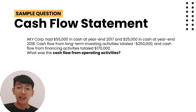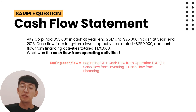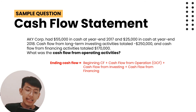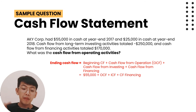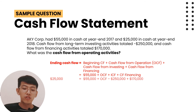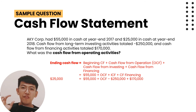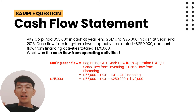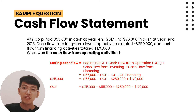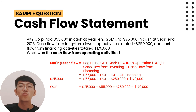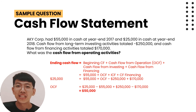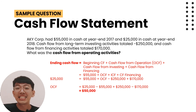We know that ending cash equals beginning cash plus net cash flow. So: 25,000 equals 55,000 plus net cash flow. Net cash flow equals operating cash flow plus investing cash flow plus financing cash flow. Therefore: 25,000 equals 55,000 plus OCF plus minus 250,000 plus 170,000. Solving for OCF: OCF equals 25,000 minus 55,000 plus 250,000 minus 170,000, which equals 50,000 dollars.